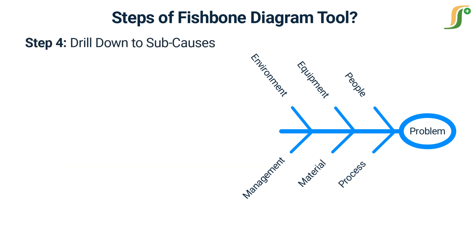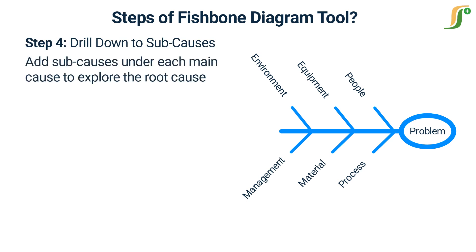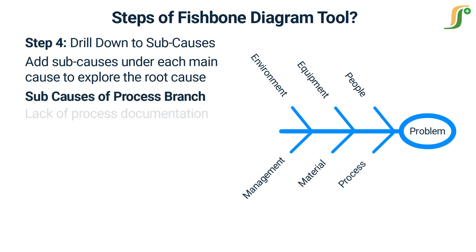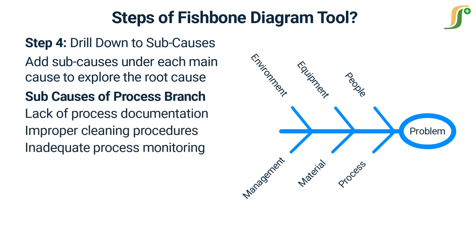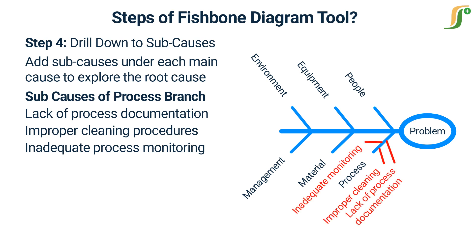Step 4: Drill down to sub-causes — further investigate and add sub-causes under each main cause to explore the root cause more comprehensively. For example, under the process branch, sub-causes may include lack of process documentation, improper cleaning procedures, or inadequate process monitoring, as shown in the diagram with red color. Drill down all branches similarly.